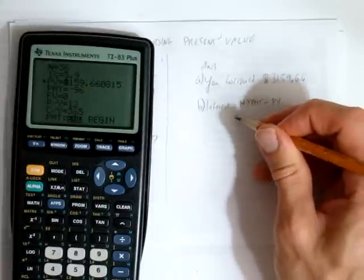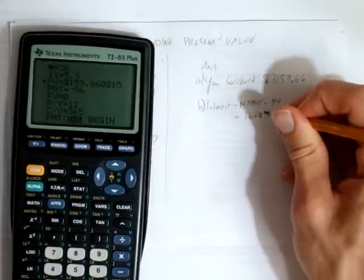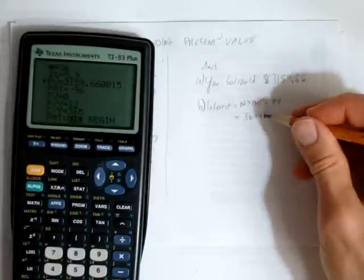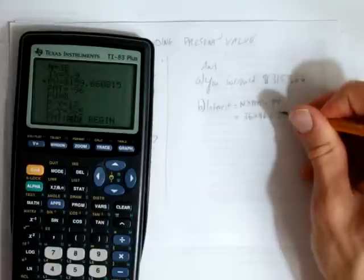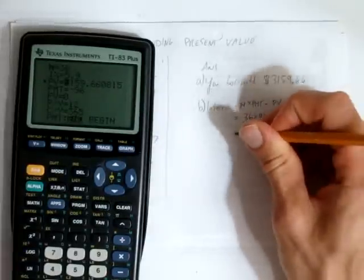that money. In other words, we spent 36 payments of $96, and our interest will be that amount, take away what we borrowed, $3,159.66.